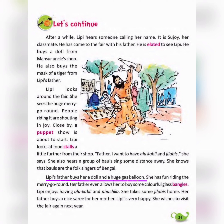She also hears a group of Bauls singing some distance away. She knows that Bauls are the folk singers of Bengal. Lippy's father buys her a doll and a huge cash balloon. She has fun riding the merry-go-round.